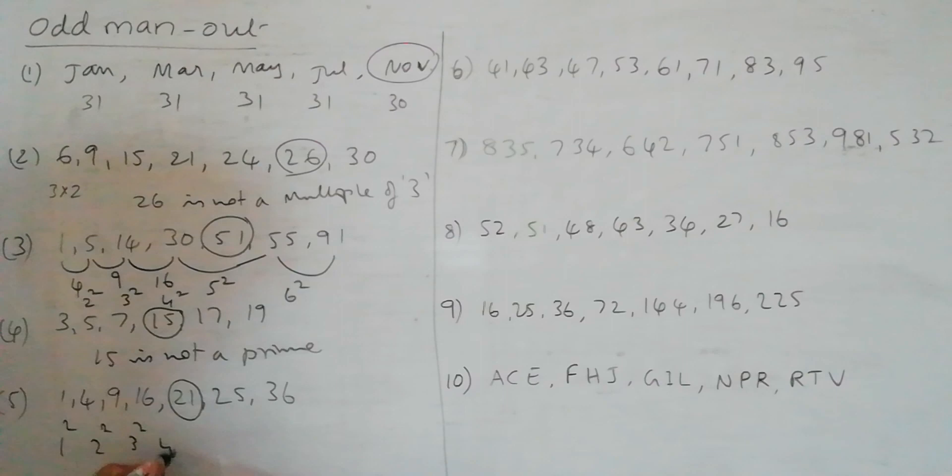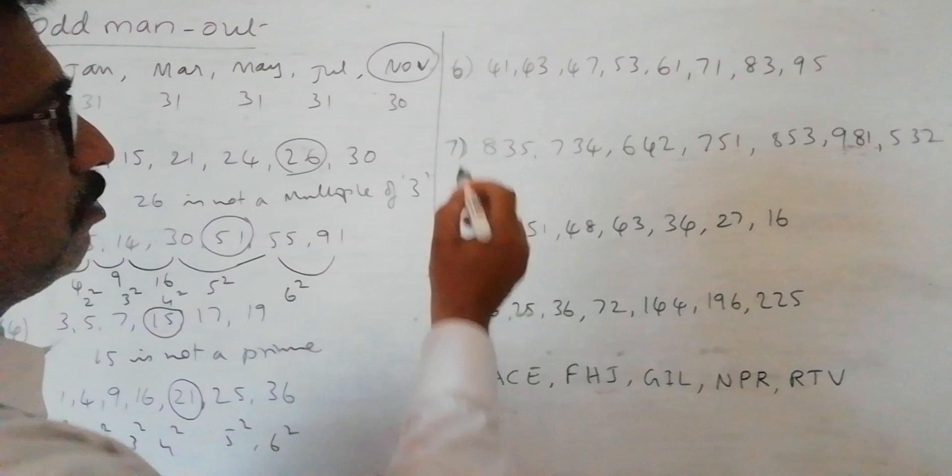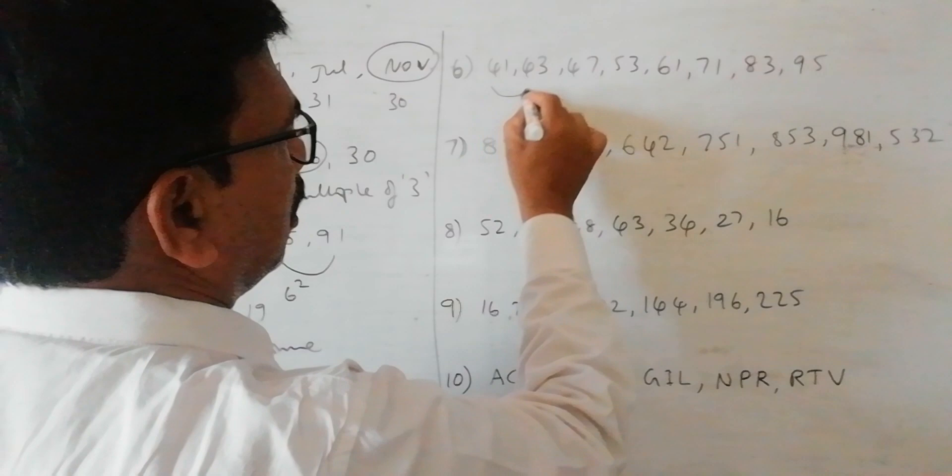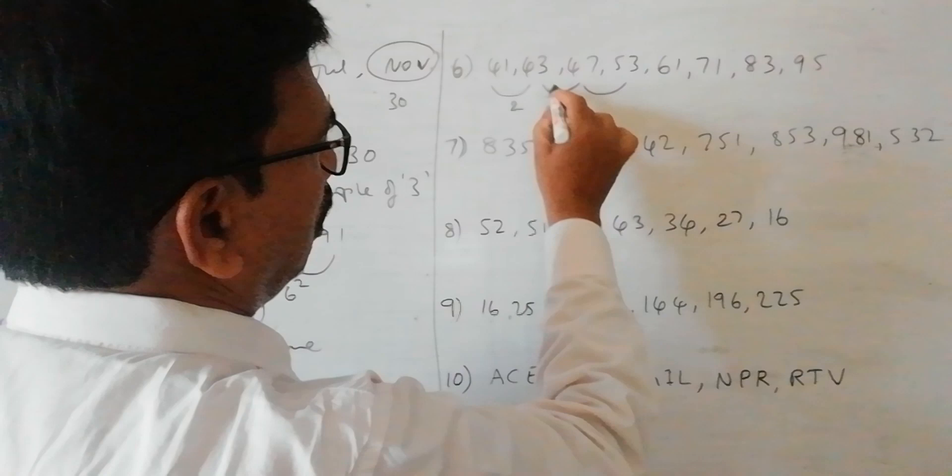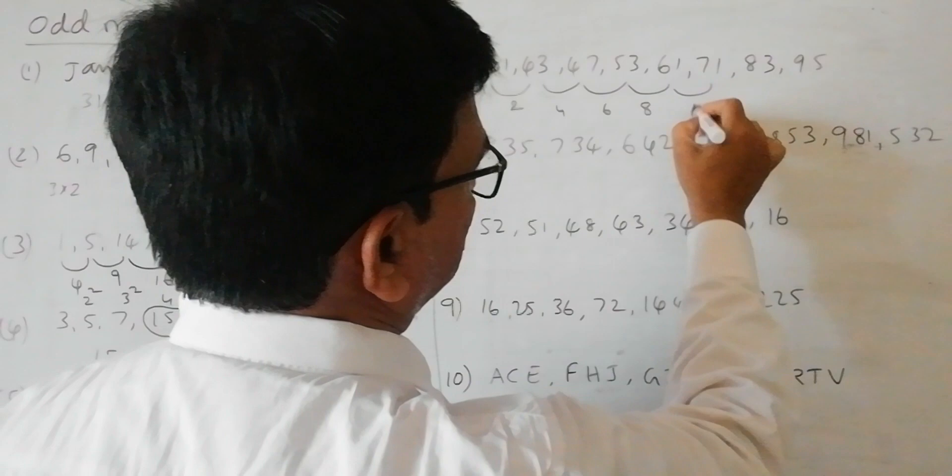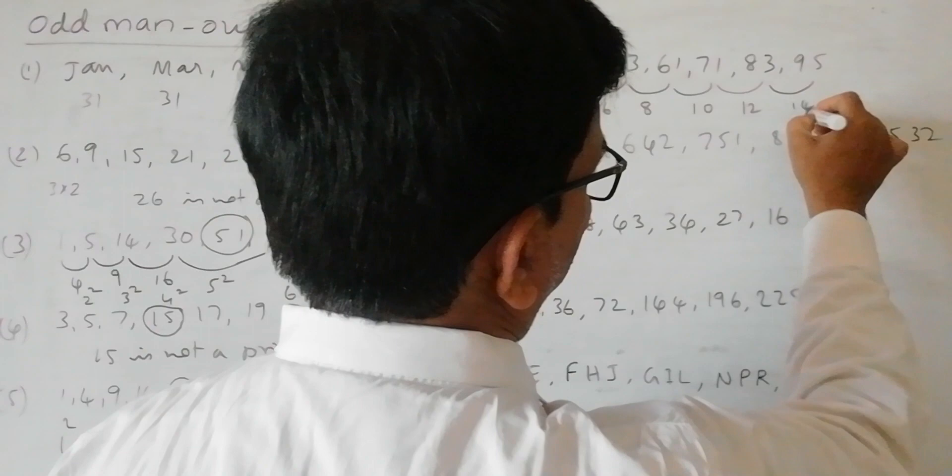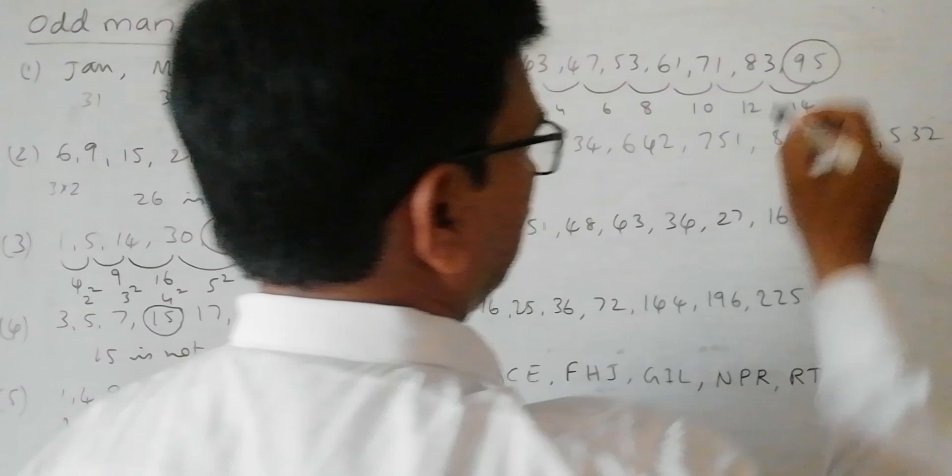Moving on to the next problem we have 41, 43, 47, 53, 61, 71, 83, 95. Here if you take the differences, the difference is 2 and here it is 4, here it is 6, here it is 8, here it is 10, next difference is 12, next should be 14. So 83 plus 14 it should be 97 but we have 95 which is odd one.